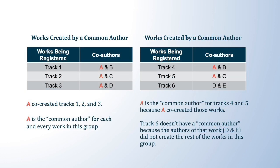For example, tracks one, two, and three have a common author because each work was co-created by the same person: A is the co-author of every work in this group, even though A co-created each work with a different co-author, namely B, C, and D. By contrast, track six doesn't have a common author because the co-authors of that work, D and E, did not create any of the other works in the group. This illustrates that at least one of the authors must have contributed copyrightable authorship to each and every work in the group.